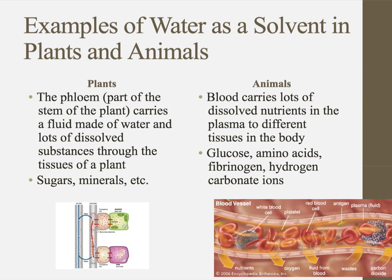When we talk about examples of how water acts as a solvent in plants and animals, we would definitely want to talk about blood plasma carrying a bunch of things to different parts of the body. Things dissolved in blood plasma include glucose, amino acids, fibrinogen — which helps with blood clotting — and hydrogen carbonate ions. The point is that blood plasma has a lot of stuff dissolved in it.